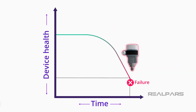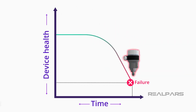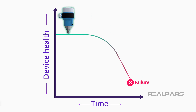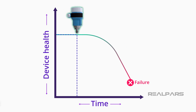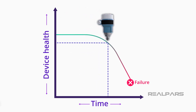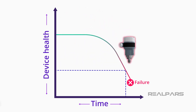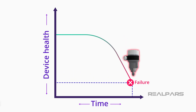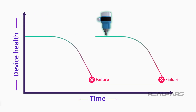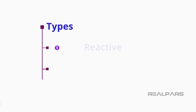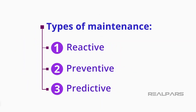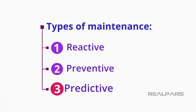Every device has a point of failure. A new device fresh from the manufacturer is healthy and problem-free. Due to wear and tear as it ages, its health slowly deteriorates and eventually it fails. At this point, you need to perform maintenance to get it back to a healthy condition. Based on this simple chart, there are three main types of maintenance: reactive, preventive, and predictive.